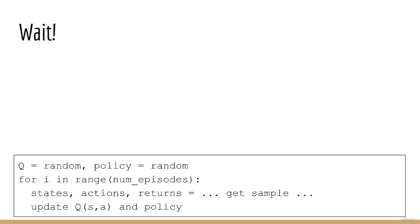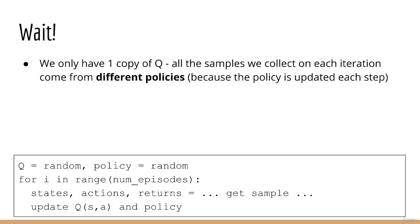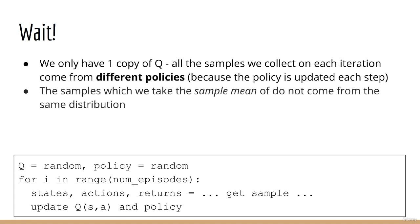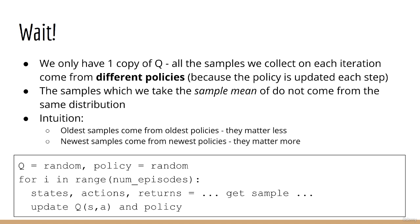Remember that, in our latest value iteration loop, we are updating the same q dictionary using different policies. This policy is being updated on each step. And therefore, the samples which we are using to calculate q are not coming from the same distribution. In this case, we don't want to use exactly the sample mean. Intuitively, the oldest samples come from the oldest policies, they don't really matter that much. The newest samples come from the newest policies, and they matter more.